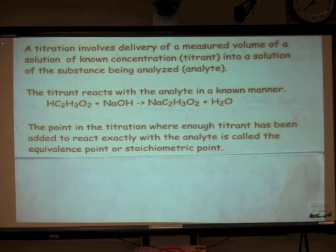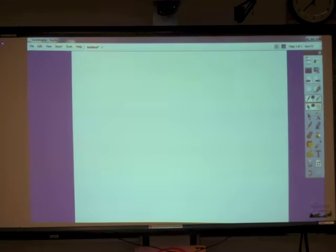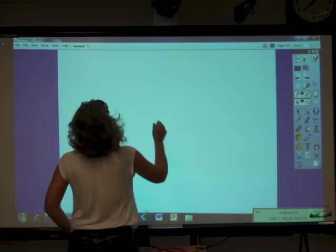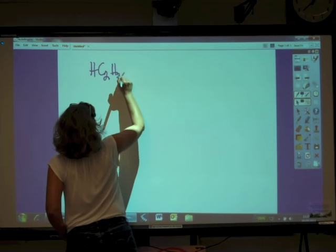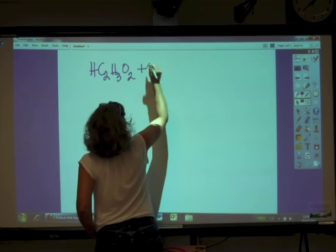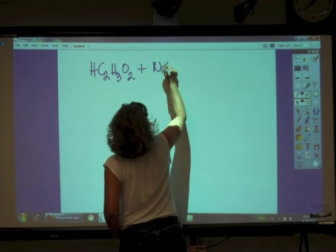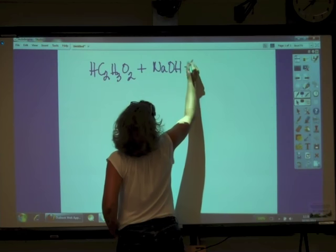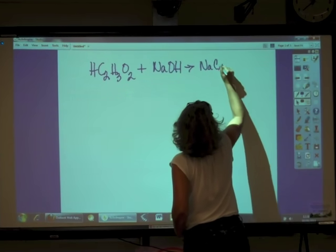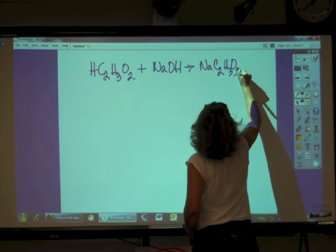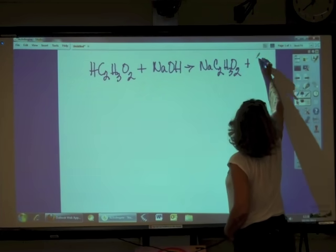Now, one thing to keep in mind about this that is really, really important, and that is, in this situation, we've got acetic acid plus sodium hydroxide gives us sodium acetate.